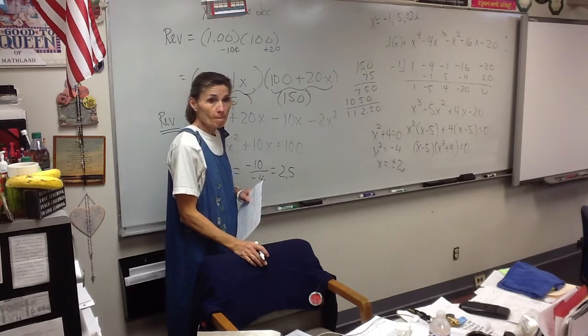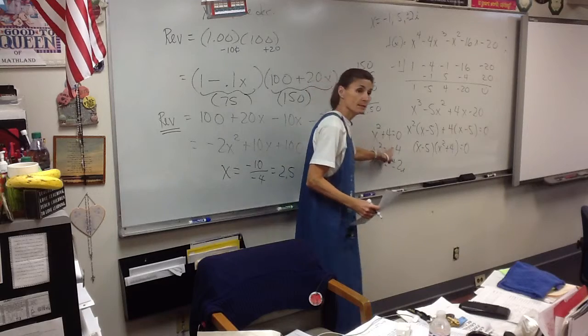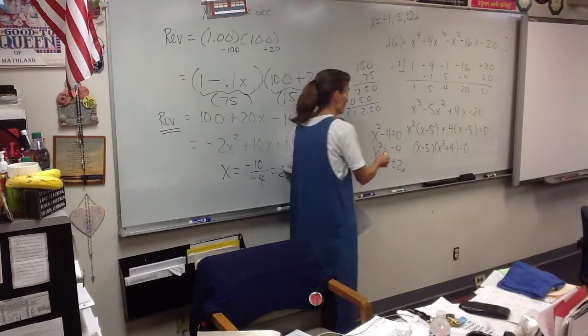This does not factor, kids. x squared plus four equals zero, x squared equals negative four, and x equals plus or minus two i. So there are your other two roots. You'd have to have the two i. Negative two and two would be the answers if this were x squared minus four, but it's not.